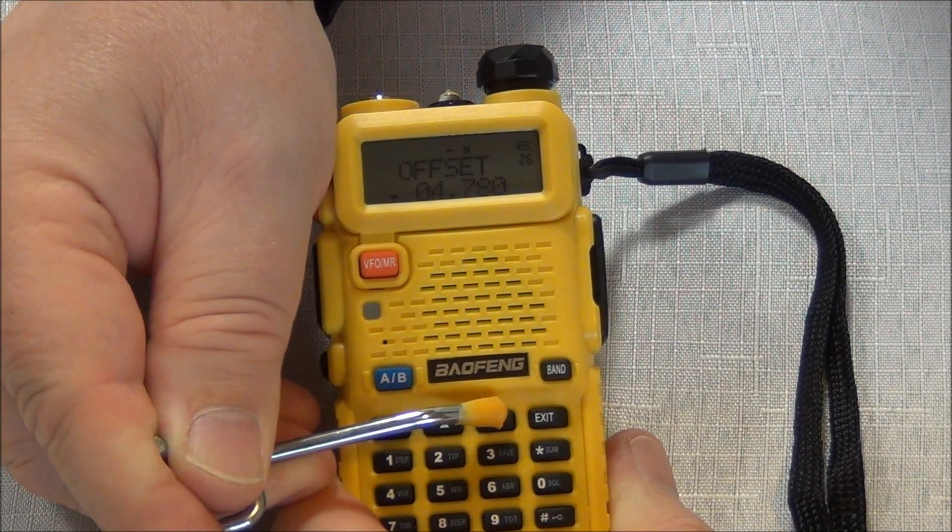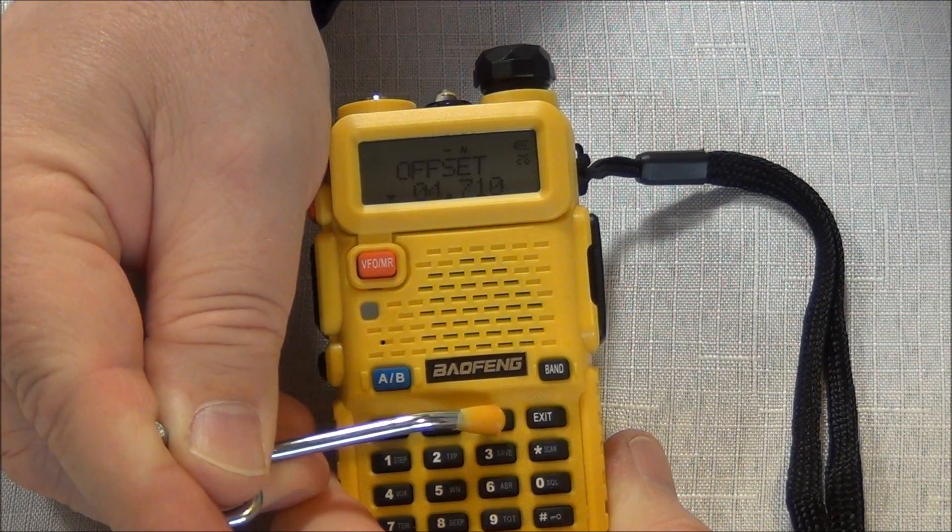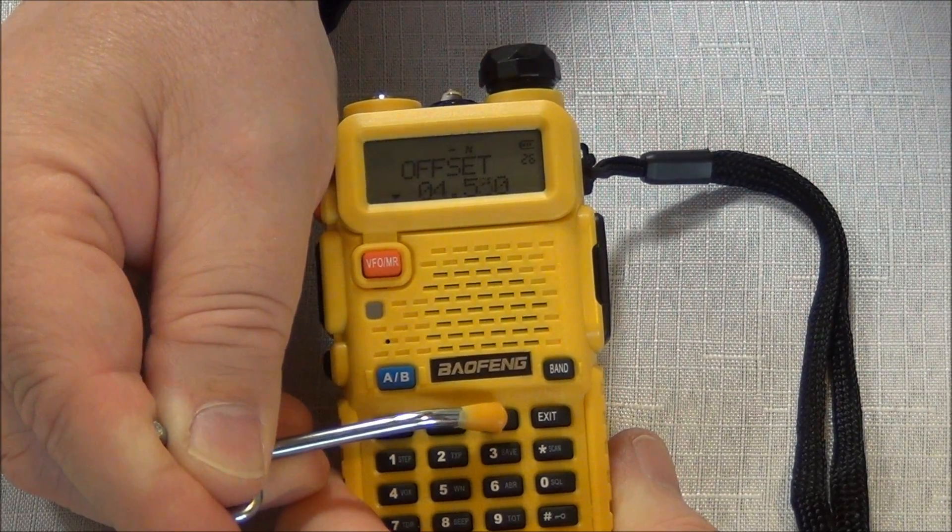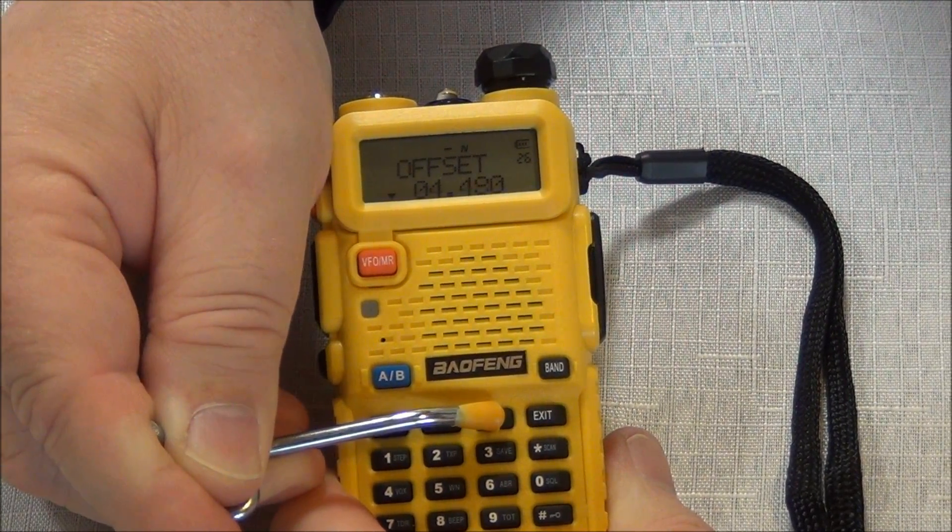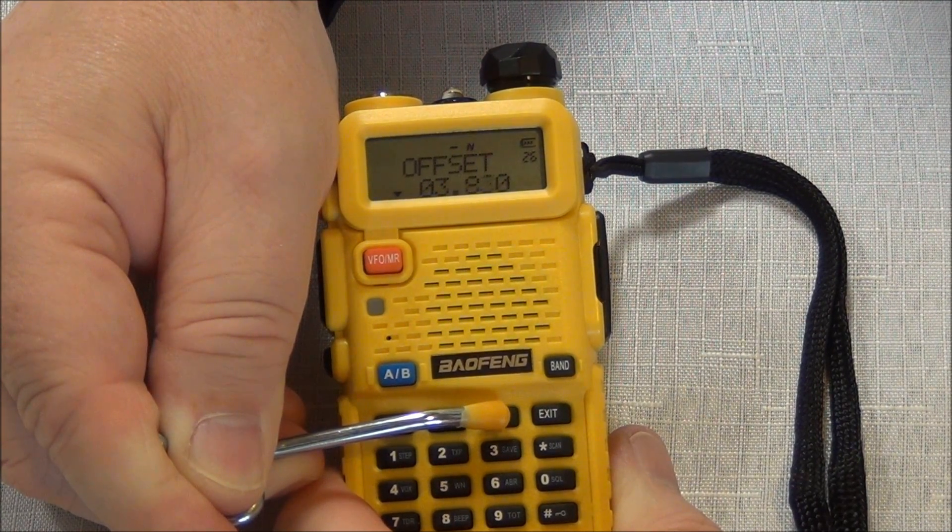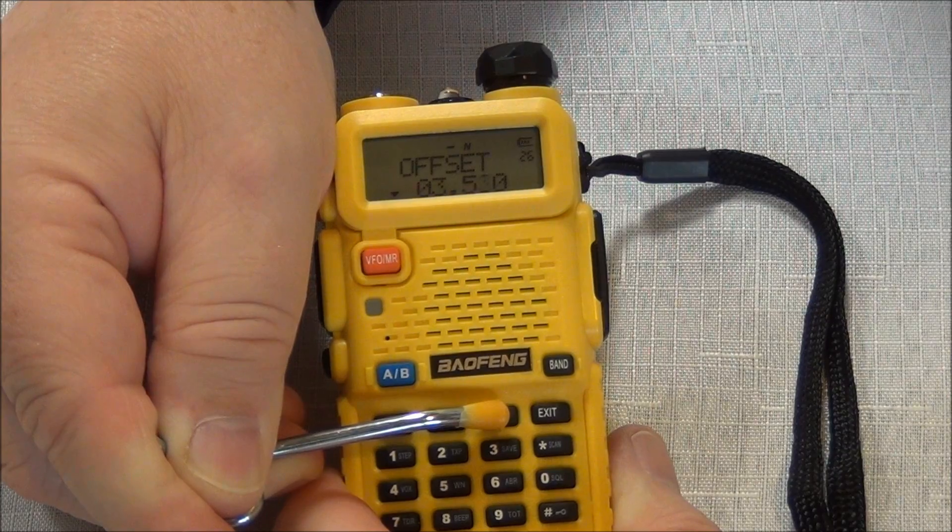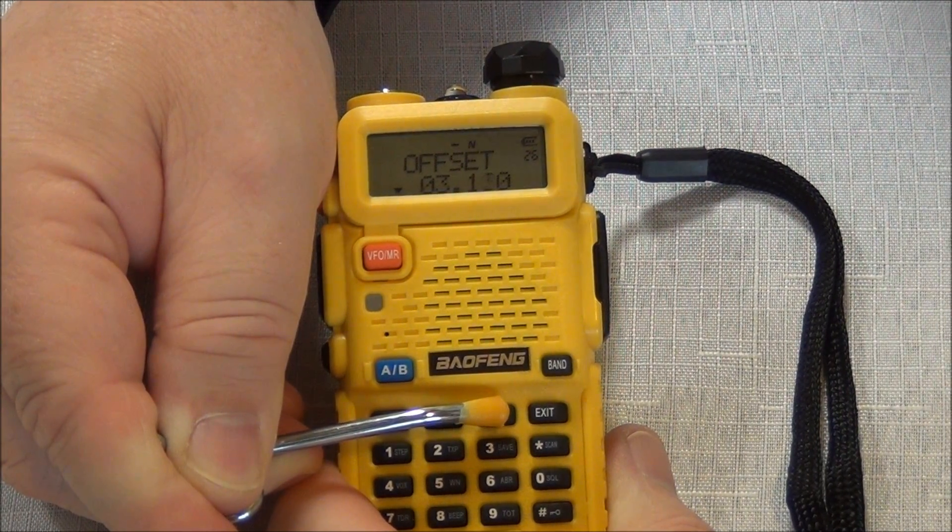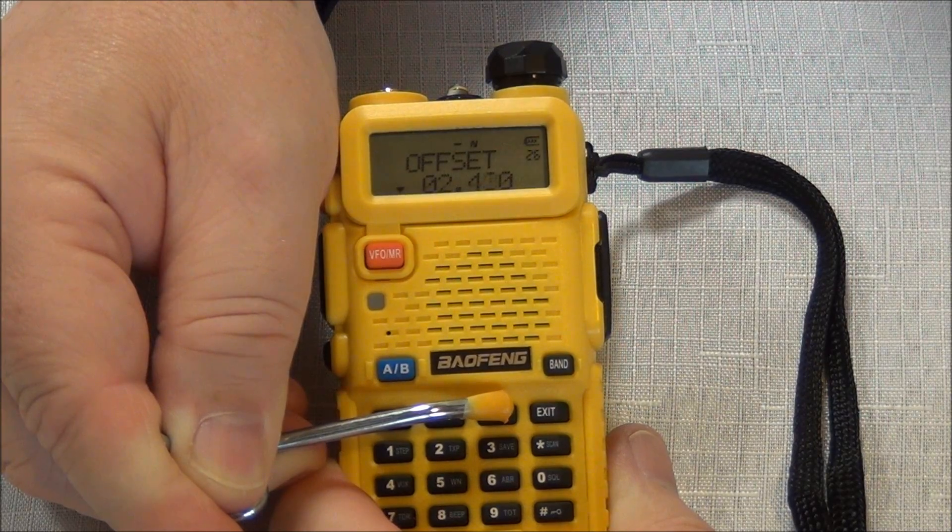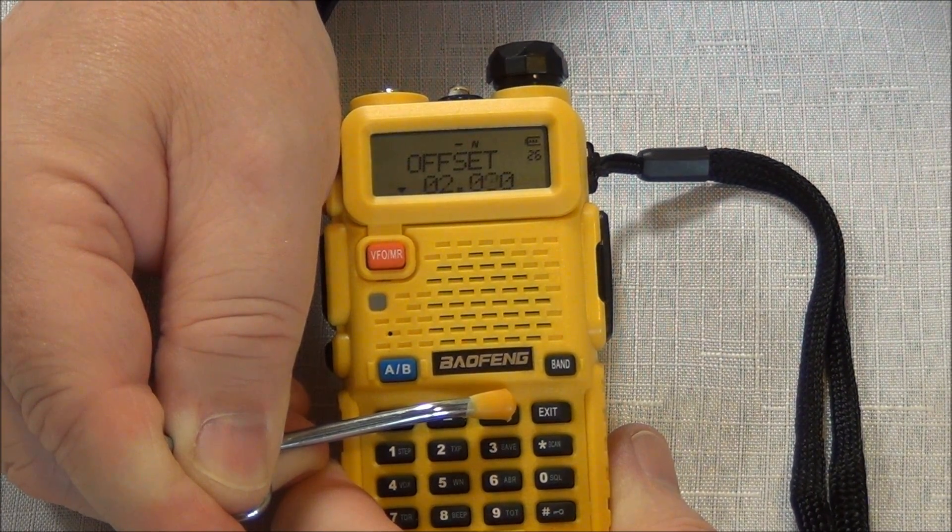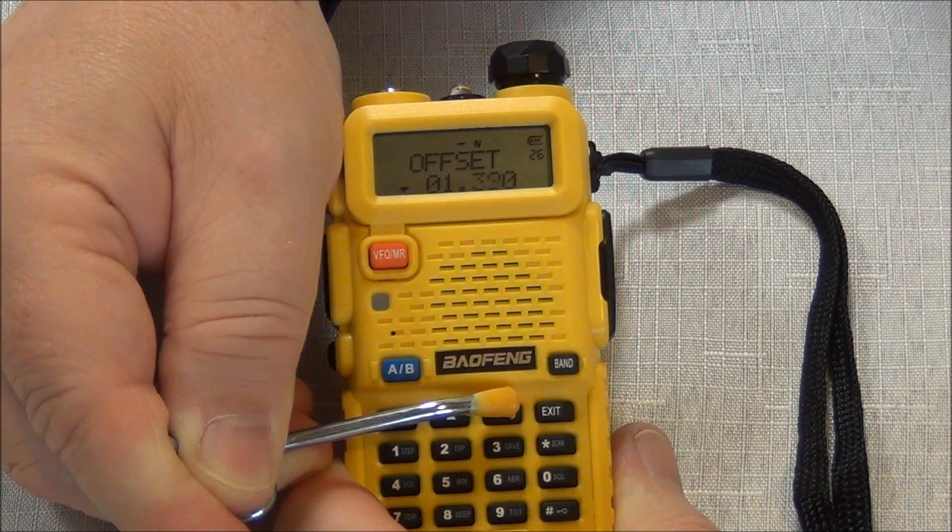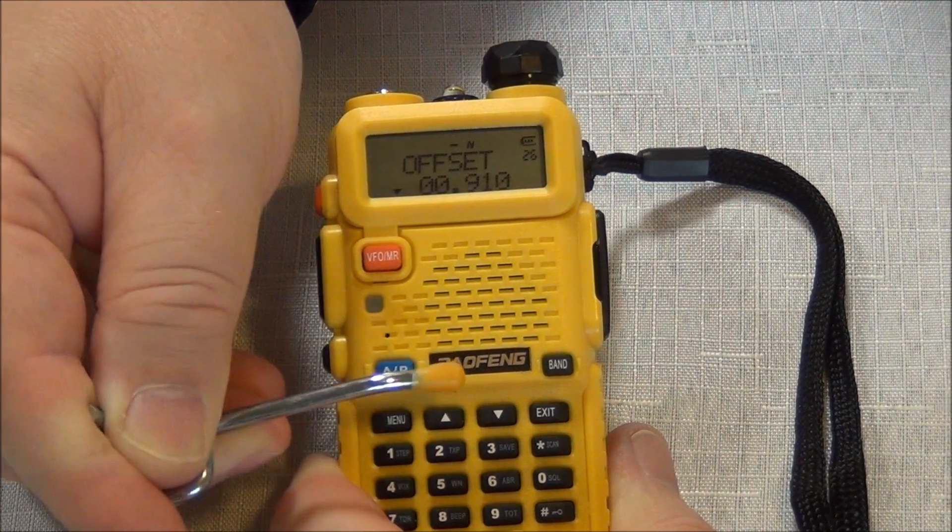Every time you hit the down arrow, it goes down significantly. So this is going to take a while. That five megahertz is actually for the UHF typical offset. So I've actually got quite a ways to go here. And if you hold it down, you can see the number scrolling by there. You don't have to push it a bunch, but you can just hold it down. I will go over programming this with the software. It is extremely easy to do with the software.